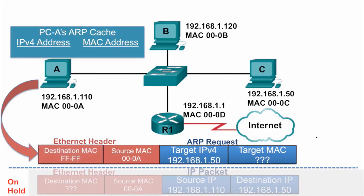The ARP request is sent as a broadcast, so everybody on the network will need to examine this Ethernet frame and process the ARP request. PCA sends it to the switch. Because it is a broadcast, the switch will flood it out all ports except for the port that it came in on.